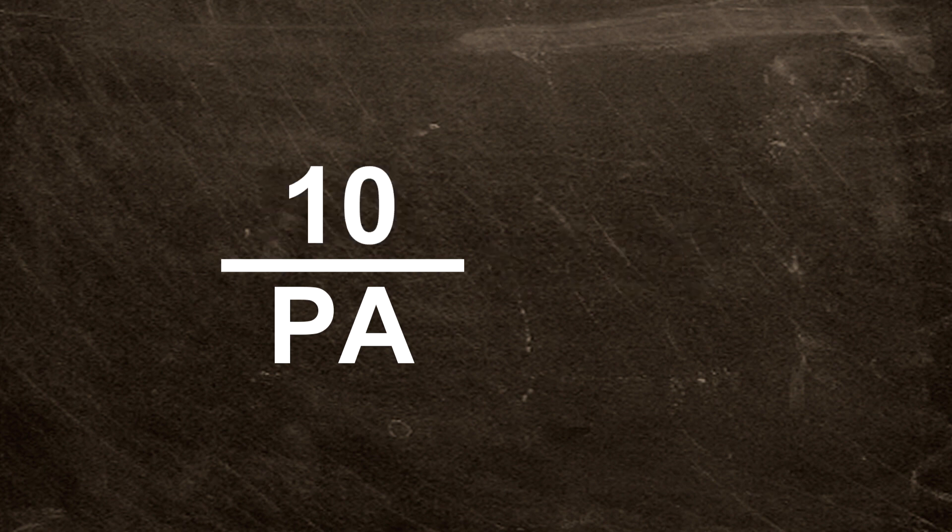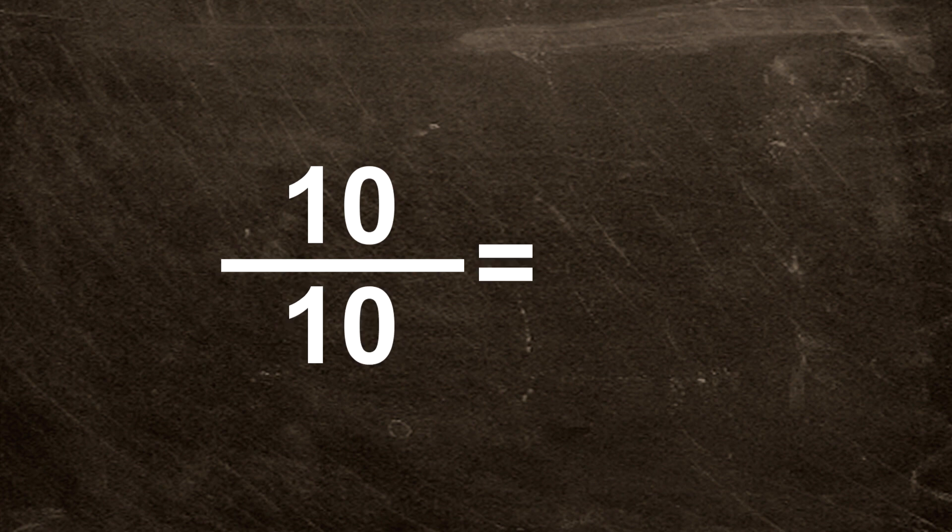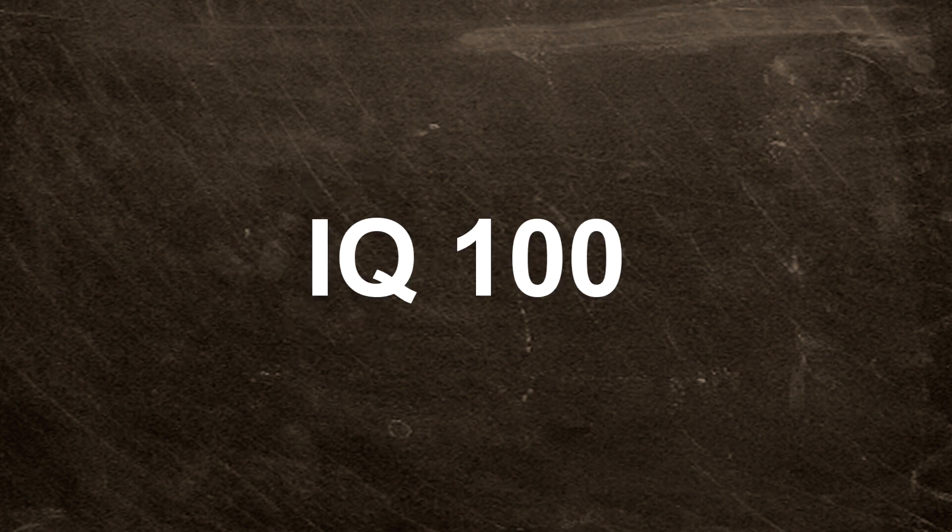For example, if your mental age is 10 and your physical age is 10, the quotient will be 1, which gives you an IQ of 100, which is considered the average IQ.